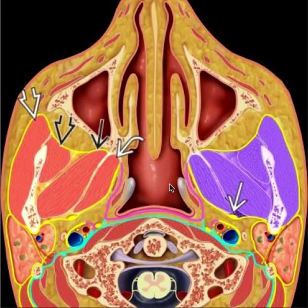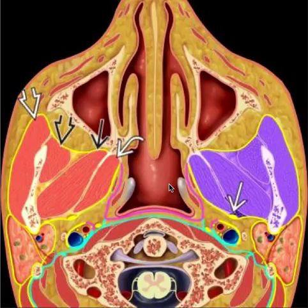The suprahyoid neck anatomy is a fairly simple one, but it carries important relations with the different spaces and different structures in this area that will help us identify any pathology.